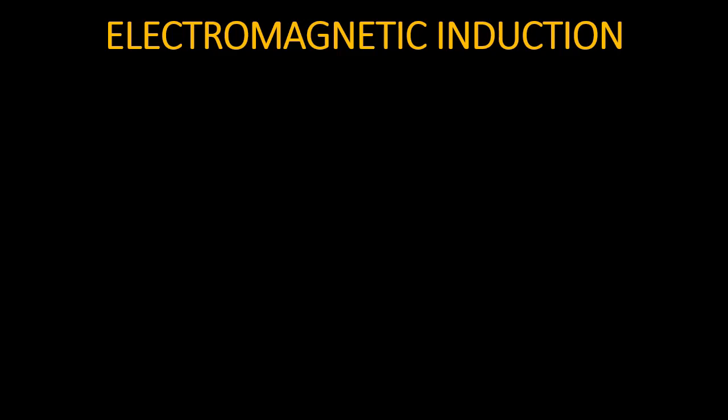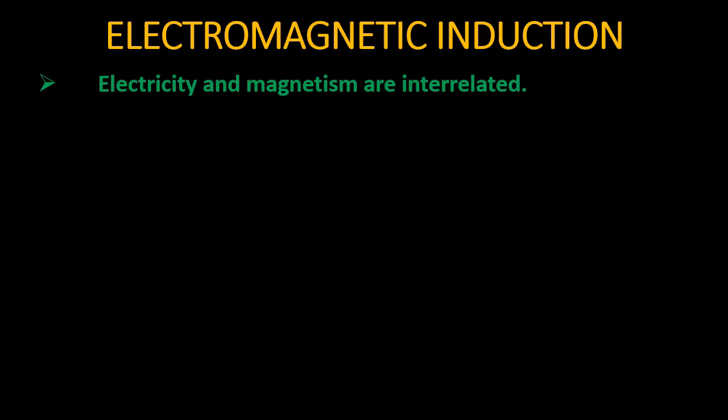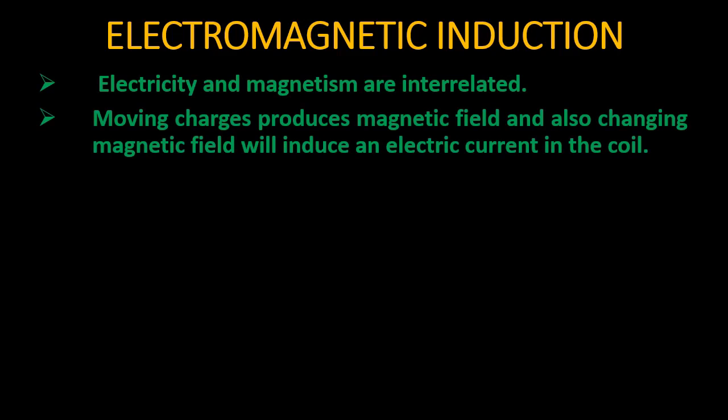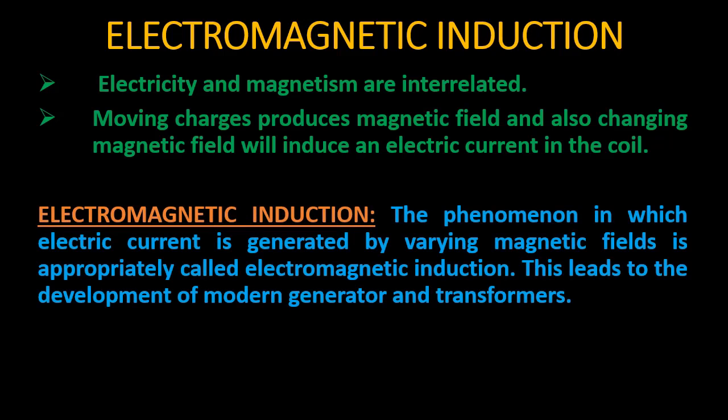So from this, what we can conclude is that magnetism is also related to electricity — electricity and magnetism are interrelated. Because moving charges produce a magnetic field, and also a changing magnetic field will induce an electric current in a coil. We define electromagnetic induction as the phenomenon in which electric current is generated by varying magnetic fields, and this leads to the development of modern generators and transformers.